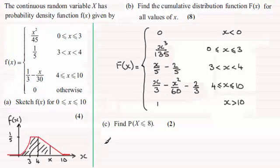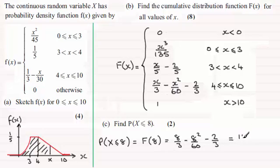So what we do then is we can say that the probability of X being less than or equal to 8 is equal to F of 8. And 8 occurs in this interval between 4 and 10, so we just need to substitute 8 into here, so it's going to equal 8 over 3 minus 8 squared over 60 minus 2 thirds. And if you work that out, you end up with 14 fifteenths.